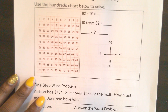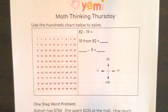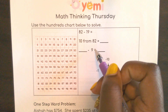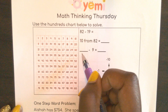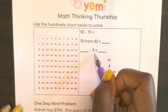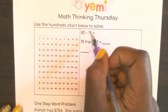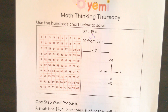So up here at the top, we have 82 minus 19. Look at the process that we're going to take here. 10 from 82 is going to give me a number — I'm going to put that number here and then subtract 9. Because I know 19 is broken into 10 and 9, that's the process I'm going to use to help me solve.